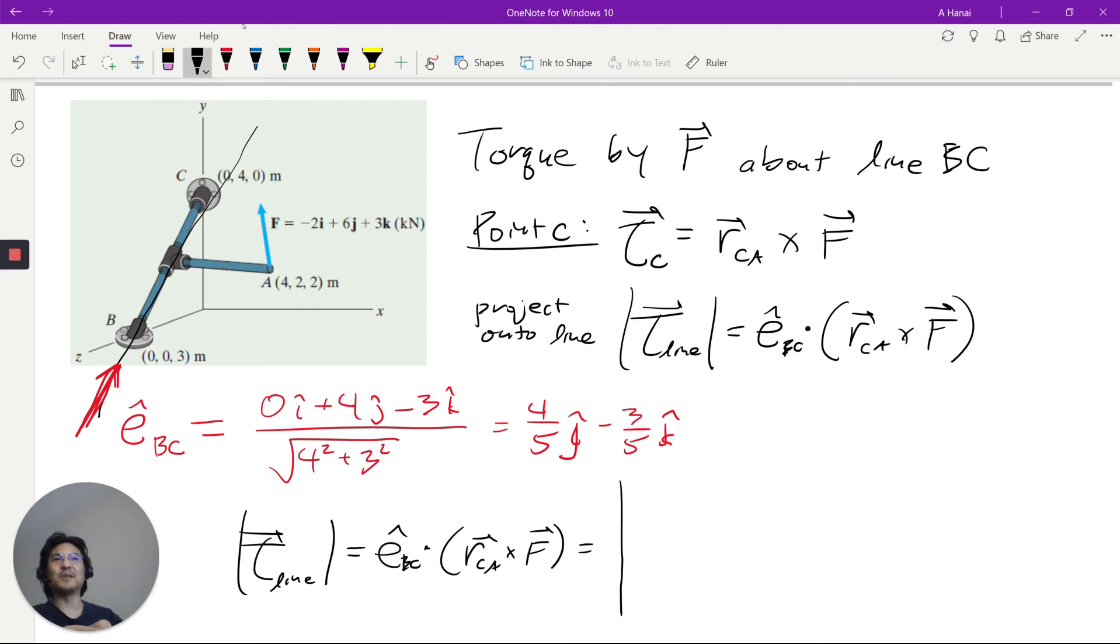So, E goes in the first row. And then, R from C to A is 4 minus 0, 2 minus 4, 2 minus 0. And then, F is, right here, negative 2, 6, 3. So, you just do this determinant.